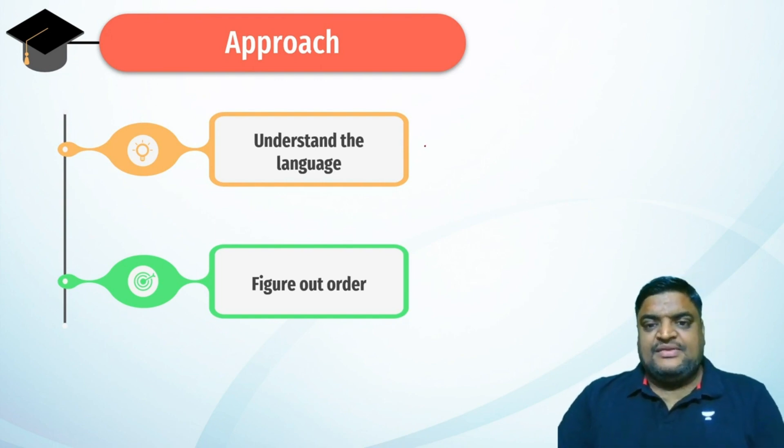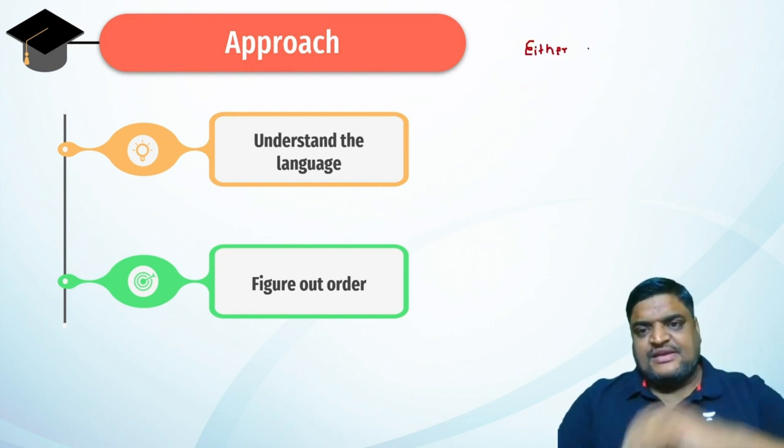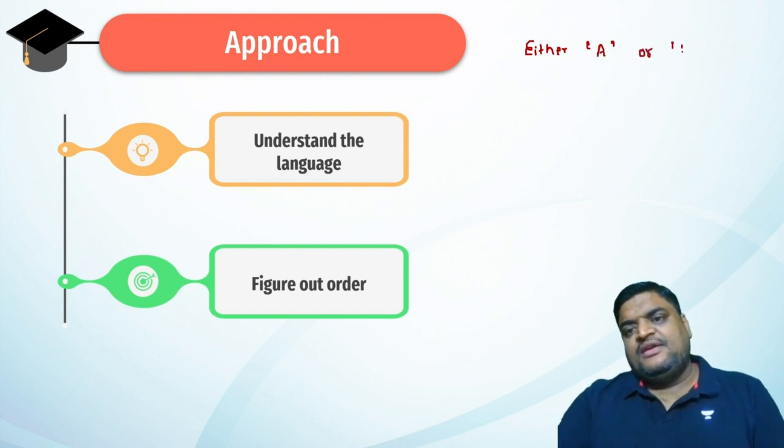Just for example, if I say either A or B is selected, logical reasoning is a game of possibilities.